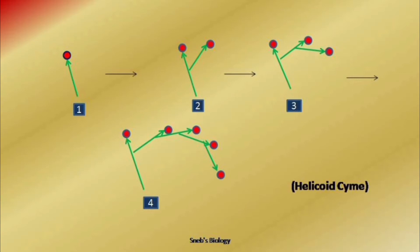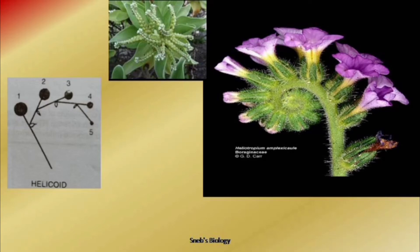We draw it this way to understand, but normally the main axis is vertical. The branches appear only on one side — either all on the left or all on the right. The term helicoid is given because it takes a clockwise turn, moving only in one direction. If all branches are produced on the same side, it is called helicoid.